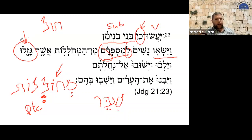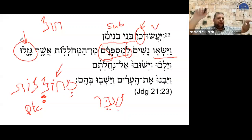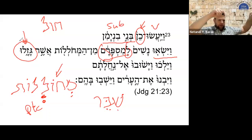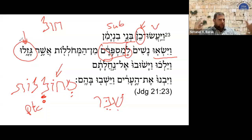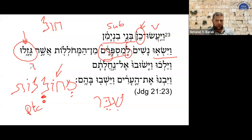We don't have a verb that is distinctively 'abducted.' In English, you would steal a chair but you would abduct a person. In Hebrew the verbs describing stealing — gazal, taking by force usually, or gannav, stealing — refer to either property or people.